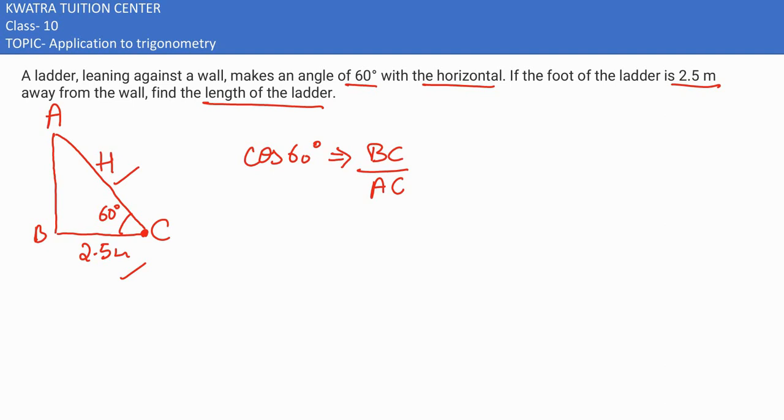So cos 60, we know, is half. BC in this case is 2.5. AC we need to find, so let it be H or you can put AC only. So cos 60 is half, 2.5. Take AC to the left-hand side, it would get multiplied with 1. Then 2.5 multiplied by 2, so 2.5 into 2 would result into 5 meters.